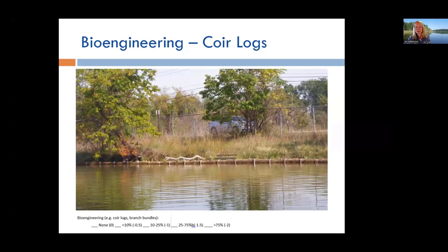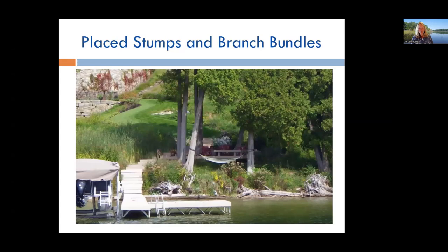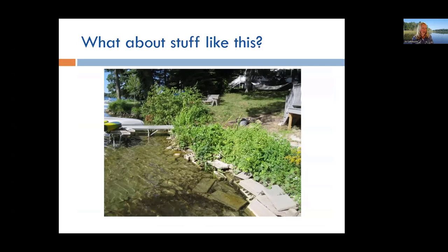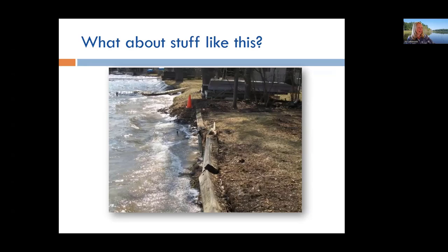Sometimes coir logs are installed along great lengths of shoreline, such as municipal projects. Woody debris used as erosion control is also counted in the bioengineering section. Some unusual setups exist — thrown-in cinder blocks and concrete pieces with some vegetation are probably sloped artificial. Railroad ties that have shifted out of place would likely be called vertical artificial.